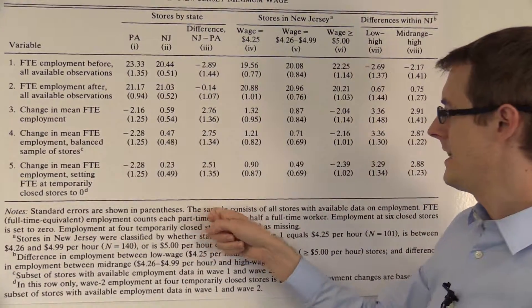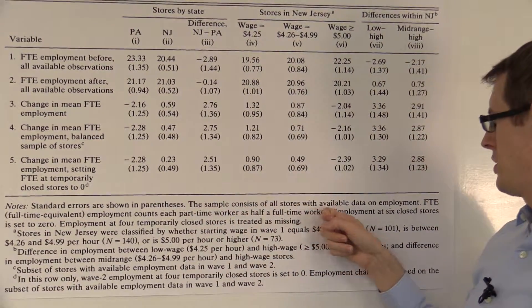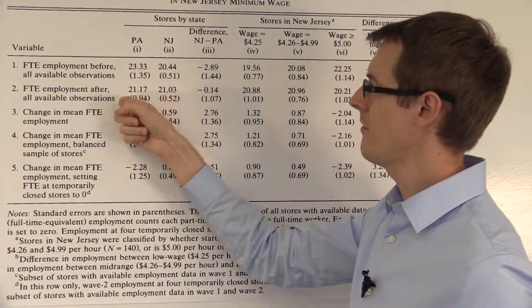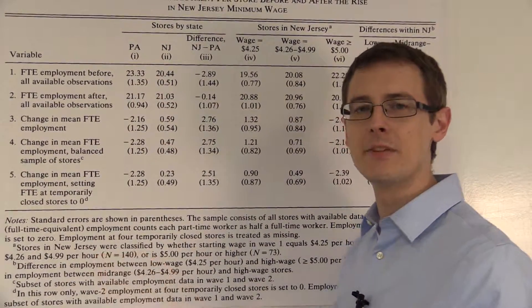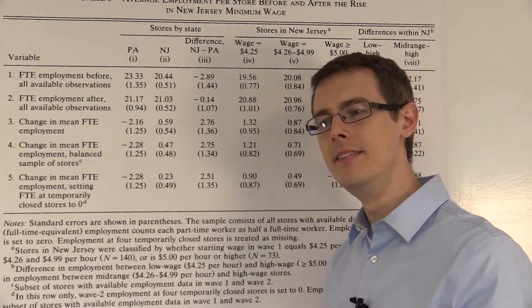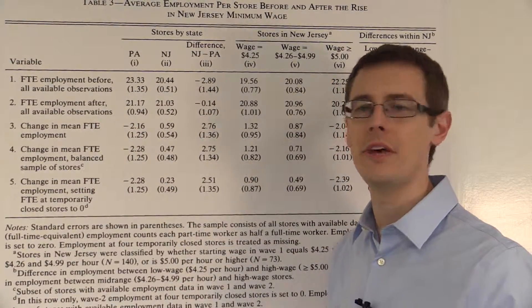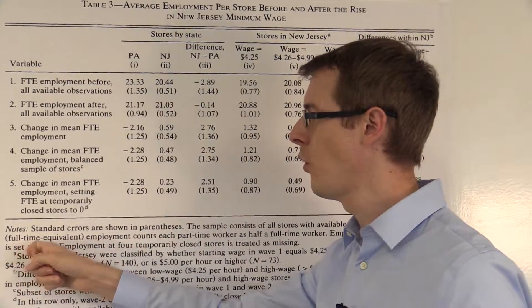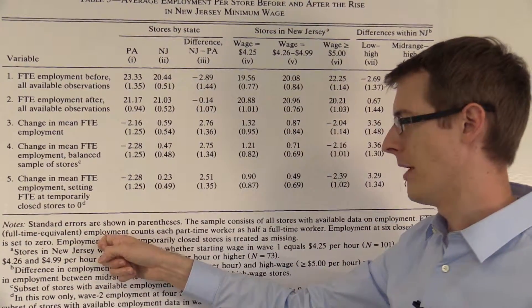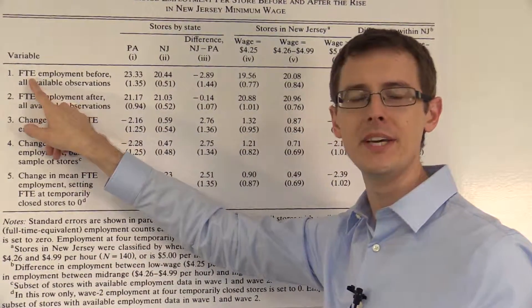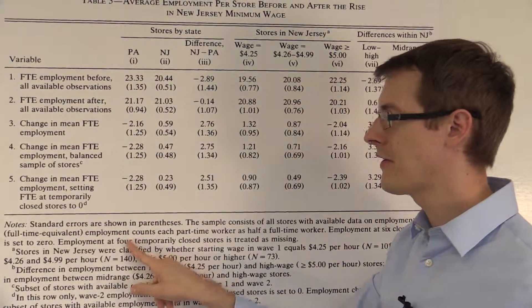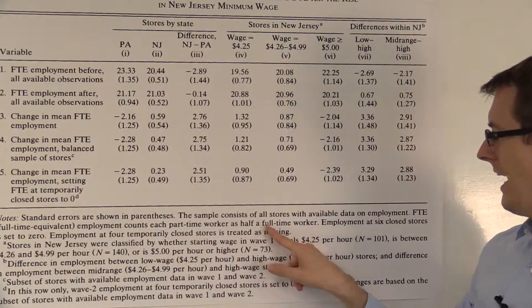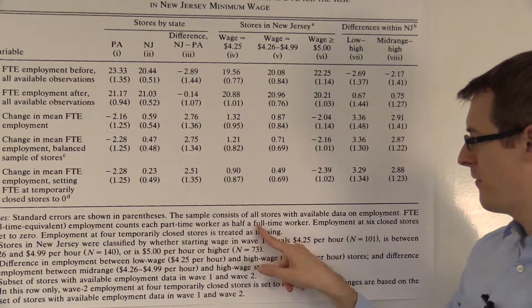Next they say the sample consists of all stores with available data on employment. So in all of these numbers, they've got data on different fast food stores, and if they had some data from that store, they include it in their sample. FTE means full-time equivalent employment, and they're defining here what that means — it counts each part-time worker as half a full-time worker.